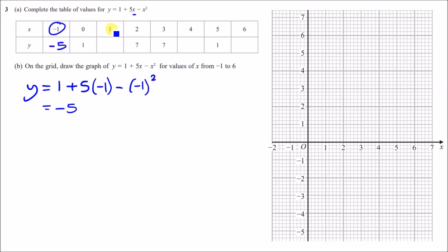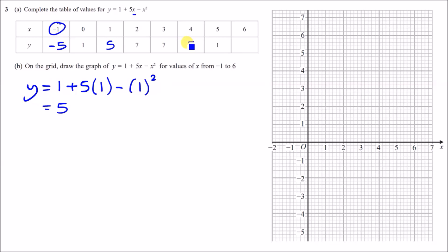For x equals one, replace to get one plus five times one minus one squared, giving a result of five. Do the same for x equals four and x equals six; you should get five and minus five respectively. That completes the table.